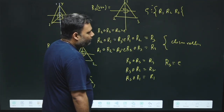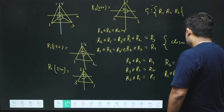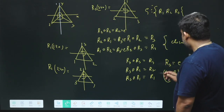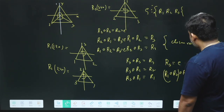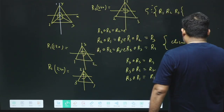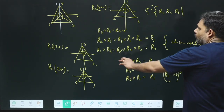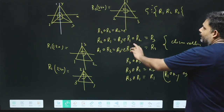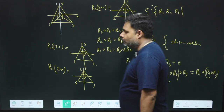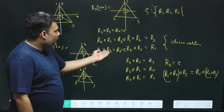Next we check the associative law. Taking R1 operation R2 operation R3: rotating by 120 degrees, then 240 degrees, then 360 degrees — we get the same result regardless of grouping, confirming associativity. We can verify that R2 operation R1 equals R3, and R1 operation R2 also equals R3. So they follow the associative rule.